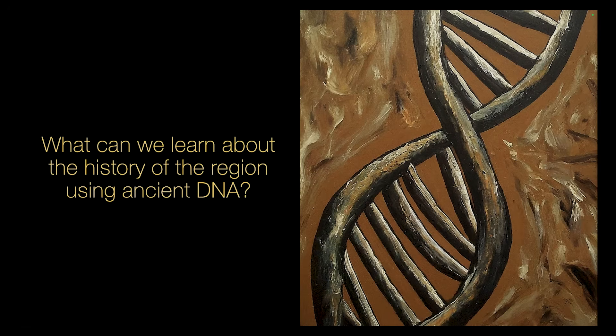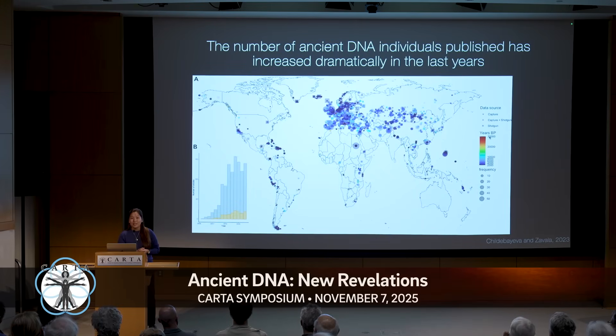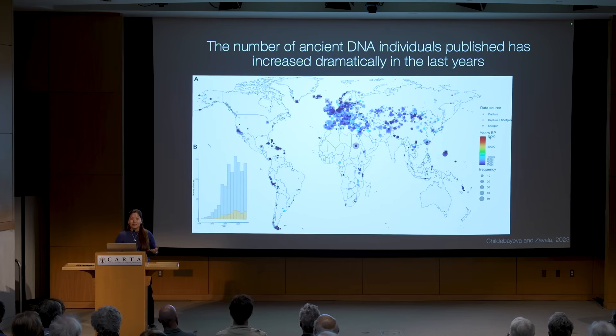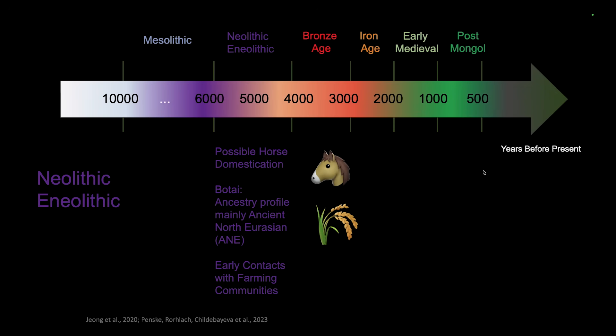The question is: what can we learn about the history of the region using ancient DNA? The number of ancient DNA individuals published has increased dramatically in recent years. However, a difference still exists in how regions are represented. We know a lot about Western Eurasia and specifically Europe for many reasons — many labs are in Europe and North America, and there are different rules and regulations about what genomes can be accessed. Many regions outside Europe, including Central Asia, remain understudied.